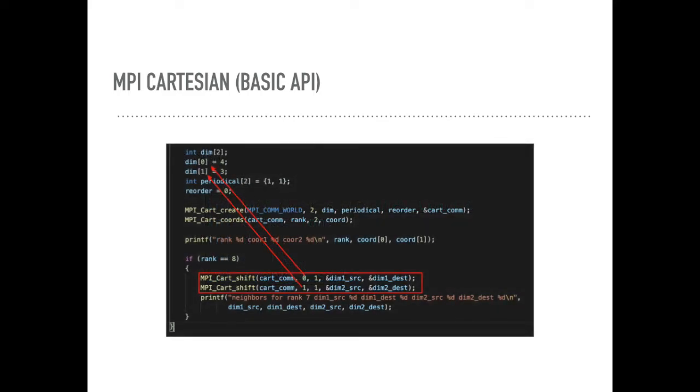Let's look at this example. We generate the coordinates by using MPI Cartesian Create and Cartesian coordinates firstly. Then, when the rank equals to 7, we use MPI Cartesian Shift to calculate the neighbor cells. There are two lines here.